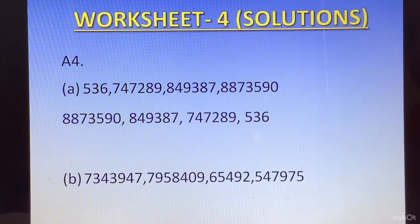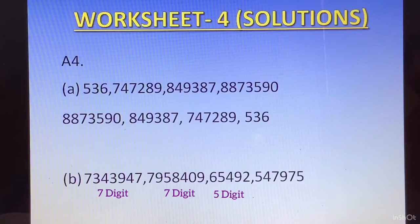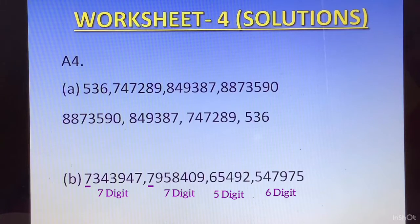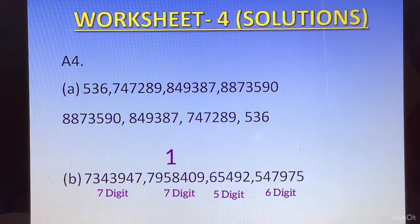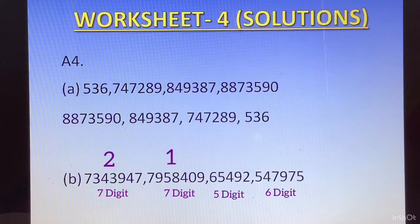The next question has a 7-digit number, then another 7-digit number, then a 5-digit number, then a 6-digit number. The greatest will be one of the 7-digit numbers. Comparing the leftmost digit — both have 7 — so we go to the next digit: 3 and 9. The number with 9 is greater: 7958409 takes first place. 7343947 takes second. Then the 6-digit number 547975 takes third, and the 5-digit number 65492 is last.